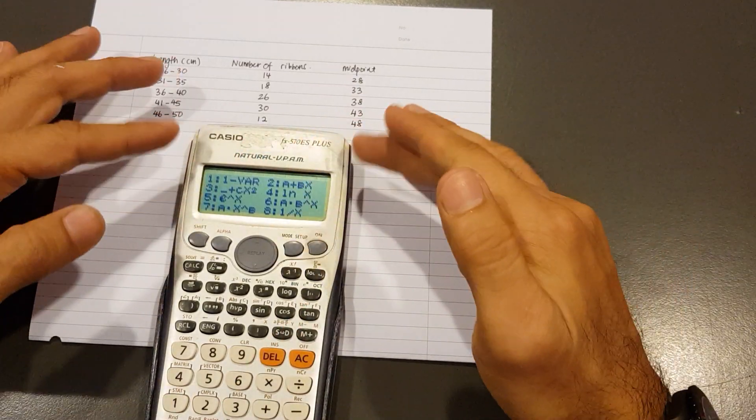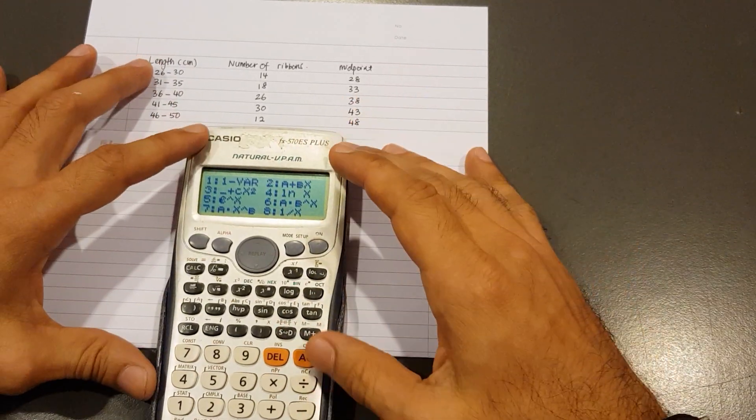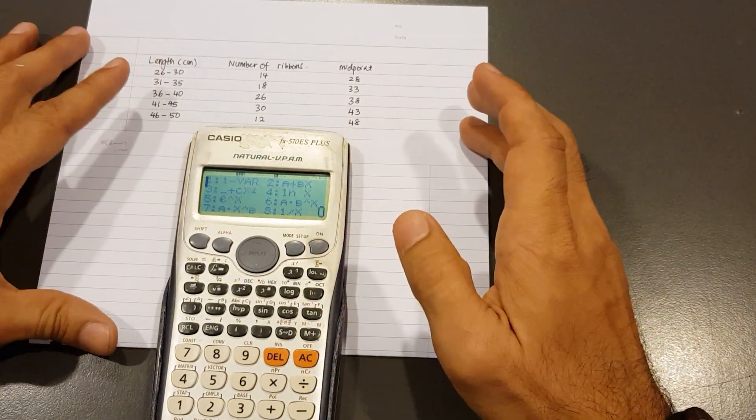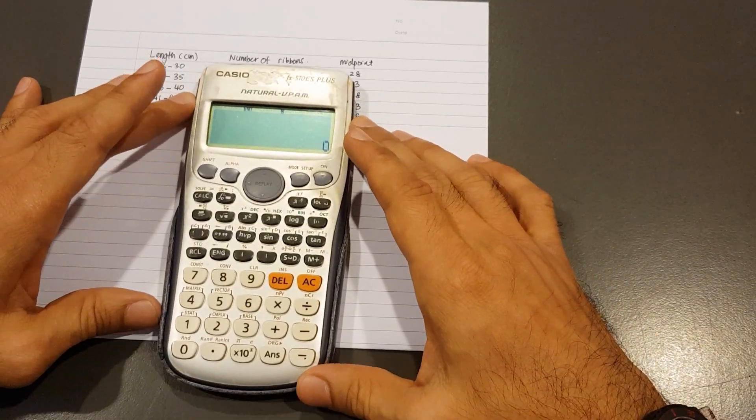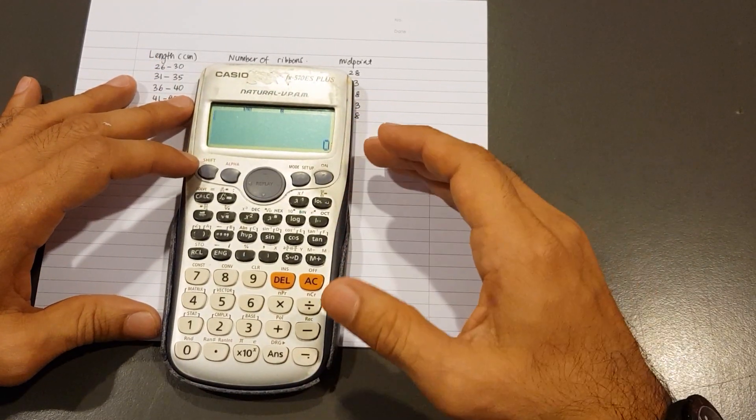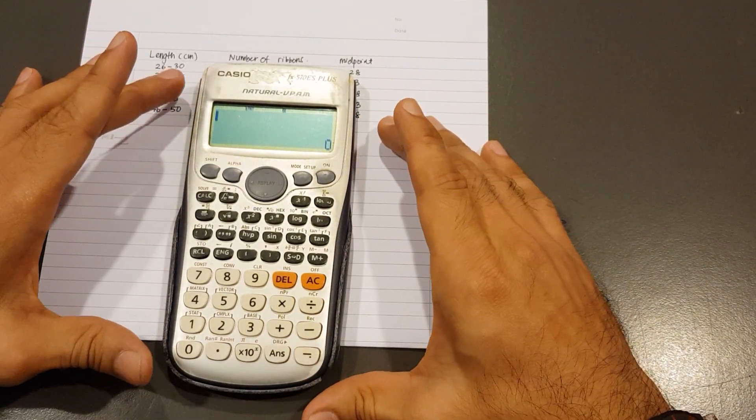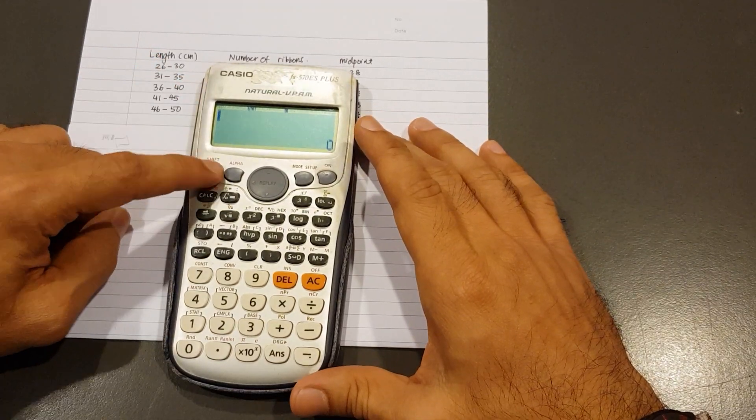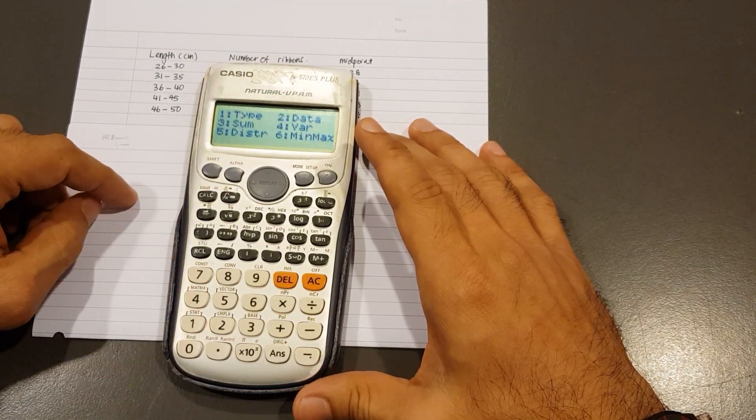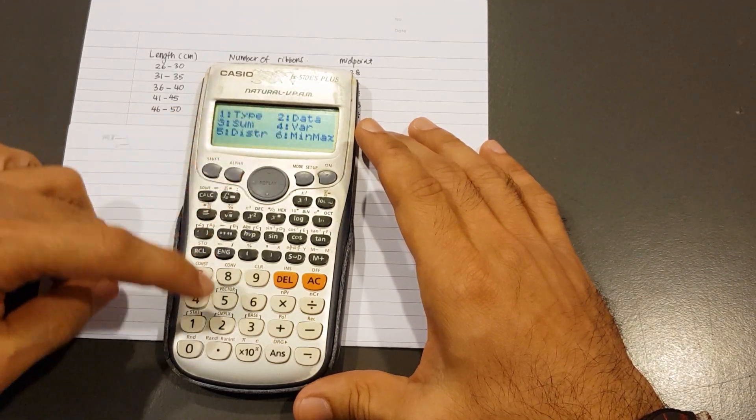You'll see the screen is filled with all this junk. You don't need that, so I'm going to type AC to clear the screen. Now, to key the data, we need to get out the table. We need to put the values into a table because the input method is a bit different from the older version. So press Shift and 1.